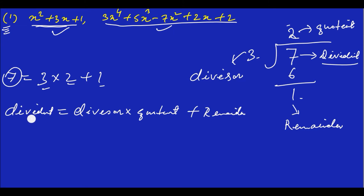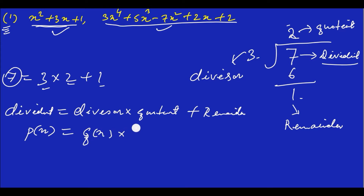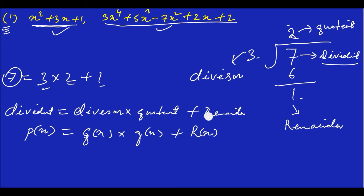Euclid's division algorithm states: Dividend equals to Divisor into Quotient plus Remainder. In polynomial form: P(x) equals to G(x) into Q(x) plus R(x).